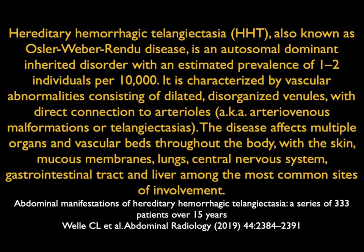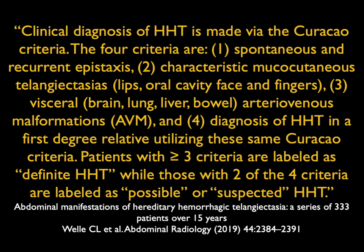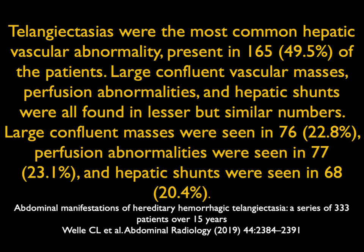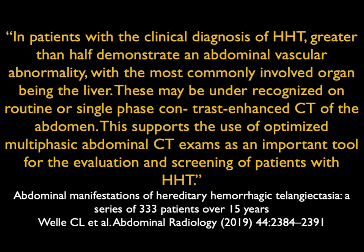A recently published article confirmed HHT is autosomal dominant, affecting one to two individuals per 10,000. The GI tract is among the most common sites involved. Looking at the Curacao criteria for HHT disease, visceral AV malformations are one of the criteria. In the liver, telangiectasias were the most common hepatic vascular abnormality, seen in up to half the cases. Large confluent vascular masses, perfusion changes, and shunts were also seen, but less frequently. In patients with a diagnosis of HHT, hepatic involvement is important to consider.